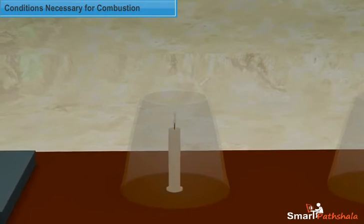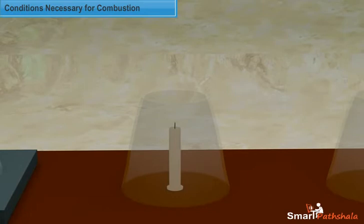Now, remove the wooden supports or blocks so that air does not enter from below. We observe that the flame flickers and produces smoke.